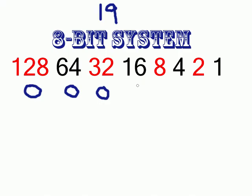16 can go into 19 once. Now what do you add to 16 to get 19? Add 8? No. Add 4? No, that gives 20. Add 2? No, that gives 18. Add 1? Yes, that gives 19. So in binary, the code for 19 is 0-0-0-1-0-0-1-1, and the computer's job is to take all this code and interpret it as the number 19.